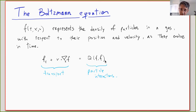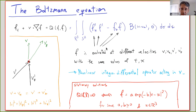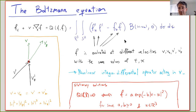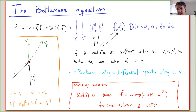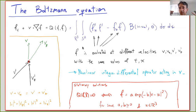The Boltzmann collision operator Q is complicated. It's a nonlinear integro-differential operator — there's a double integral and it involves f always evaluated at the same time and x, so it acts in the velocity variable only. For fixed t and x, I evaluate f at different values of velocity and integrate. When I write f I mean f at (t,x,v); when I write f* I mean f at (t,x,v*), where v* is a variable of integration.